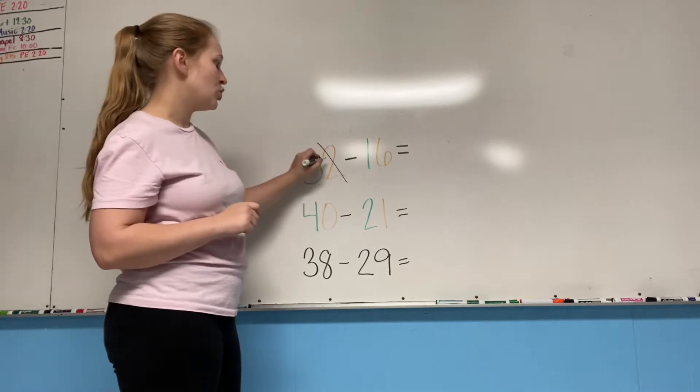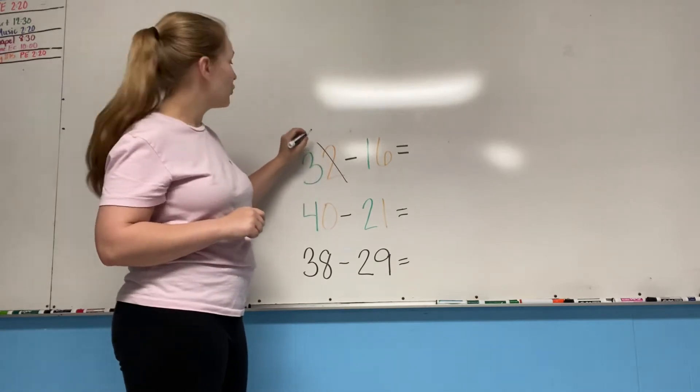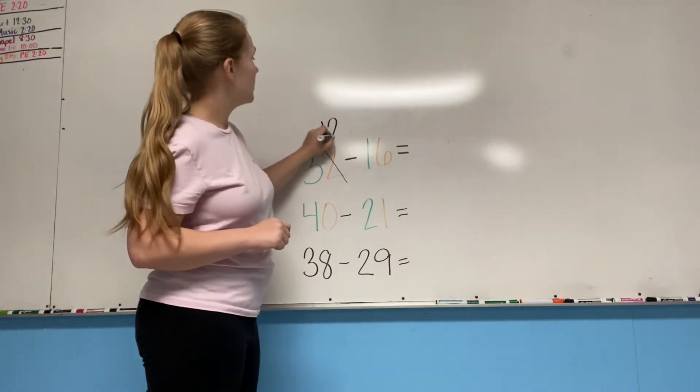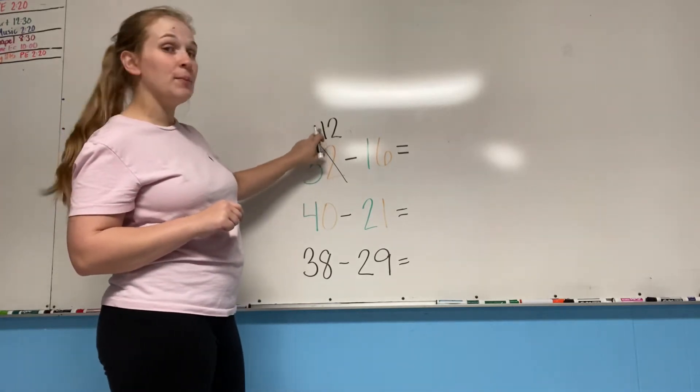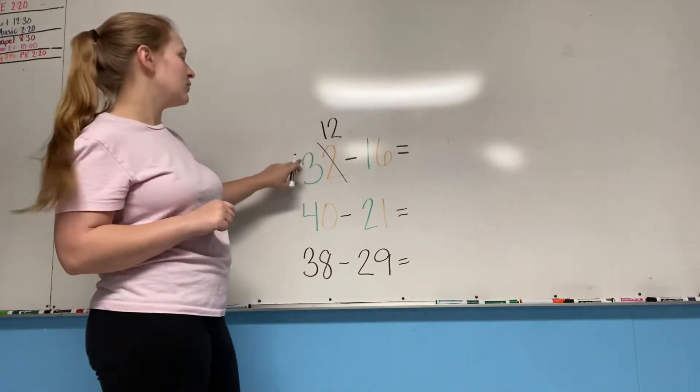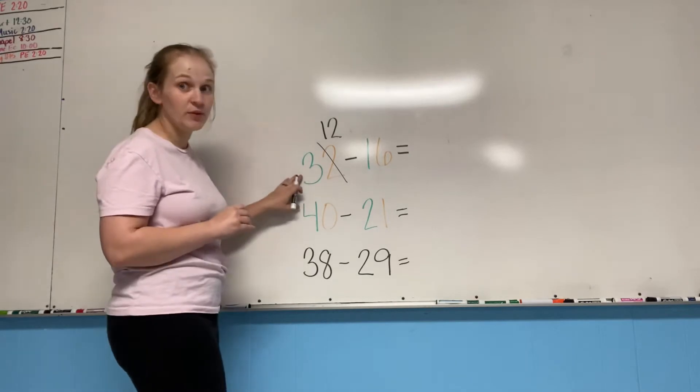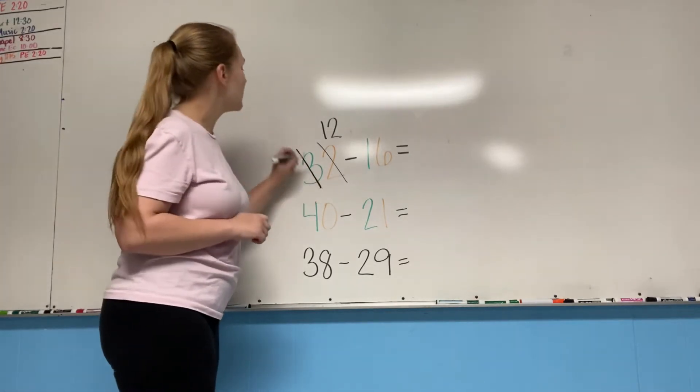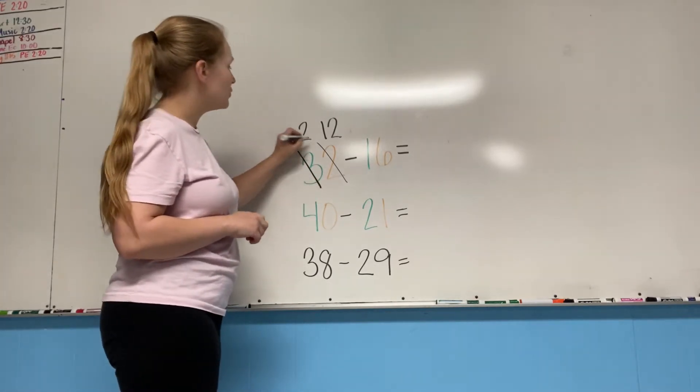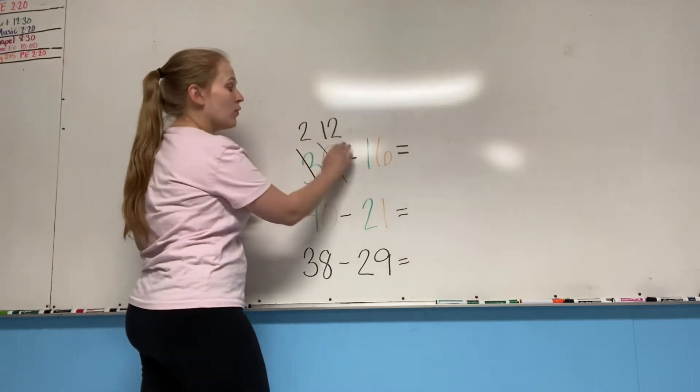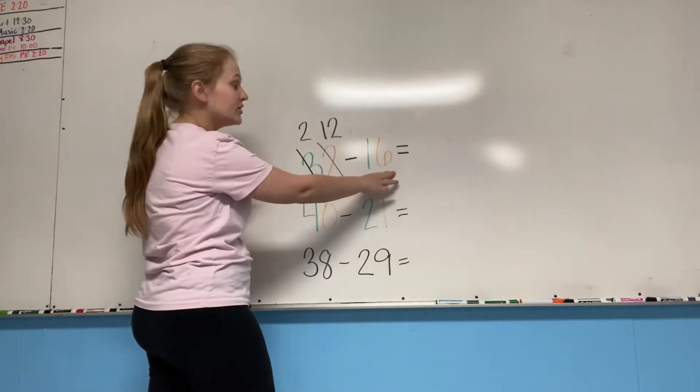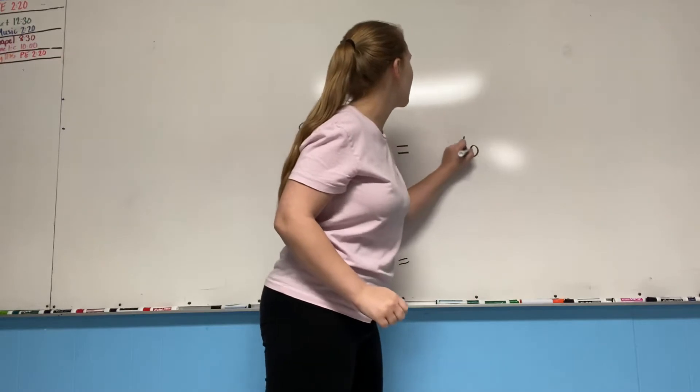This one needs to borrow, so the two becomes a 12. And where are we getting the one from? We got it from this three, from the tens place. So the three becomes a two. So now we have 12 minus six equals six in the ones place.